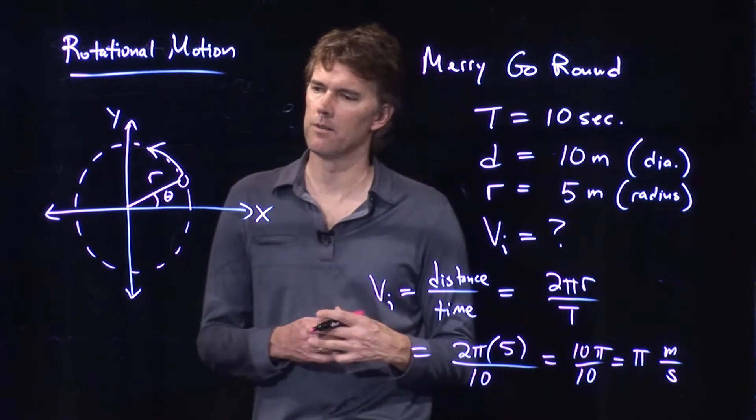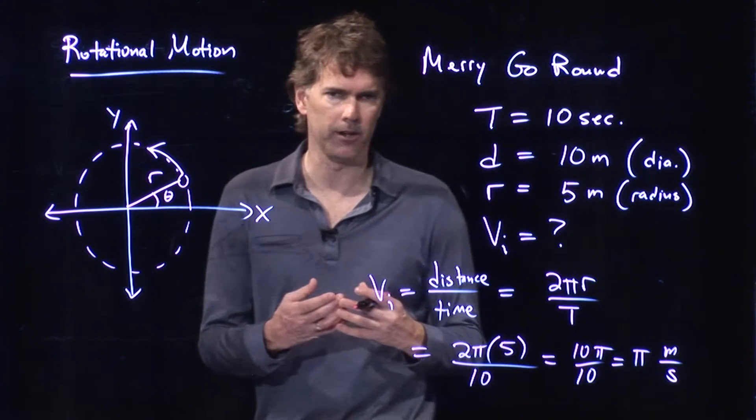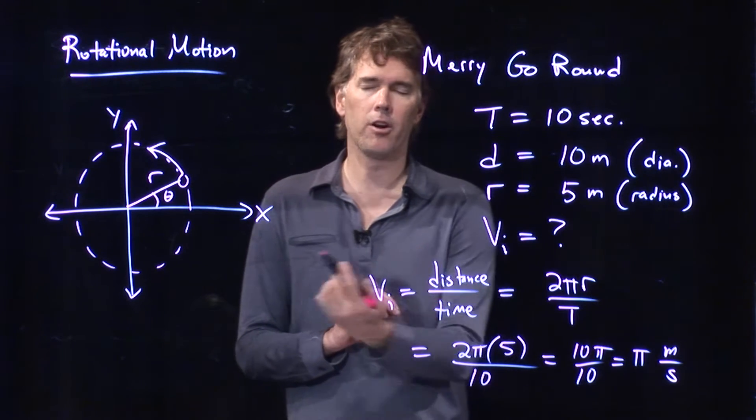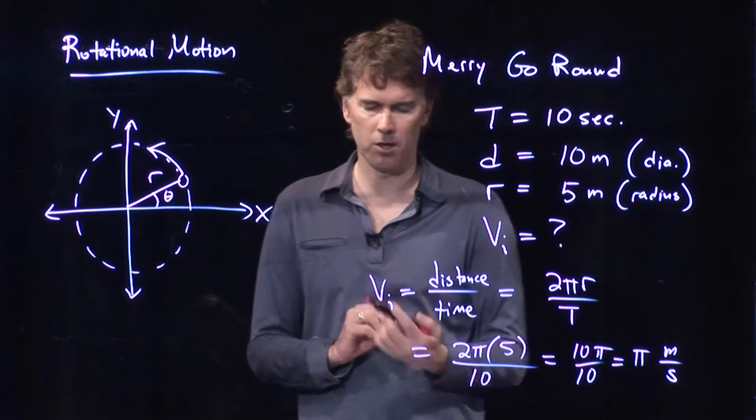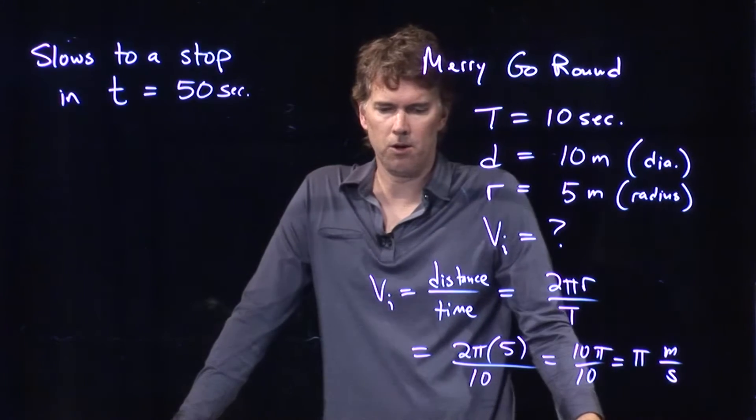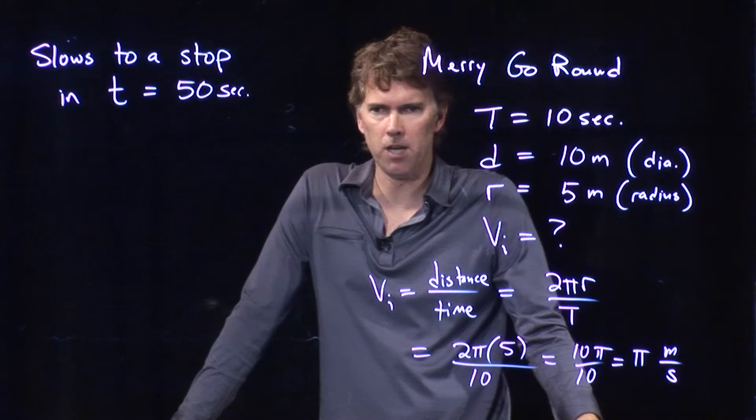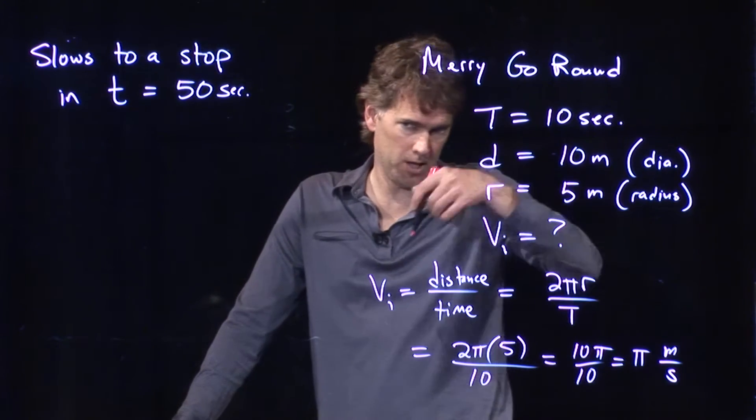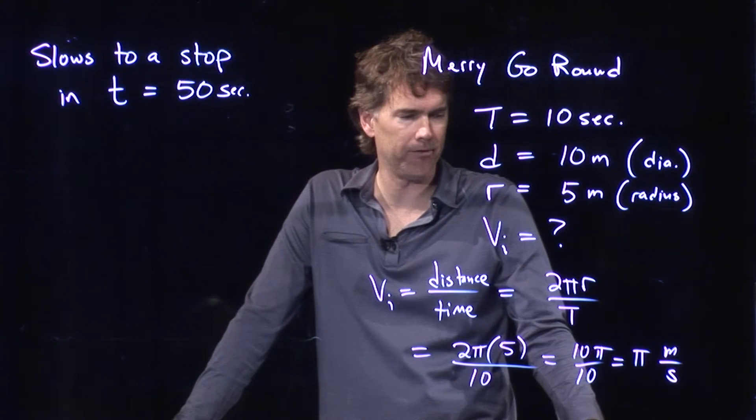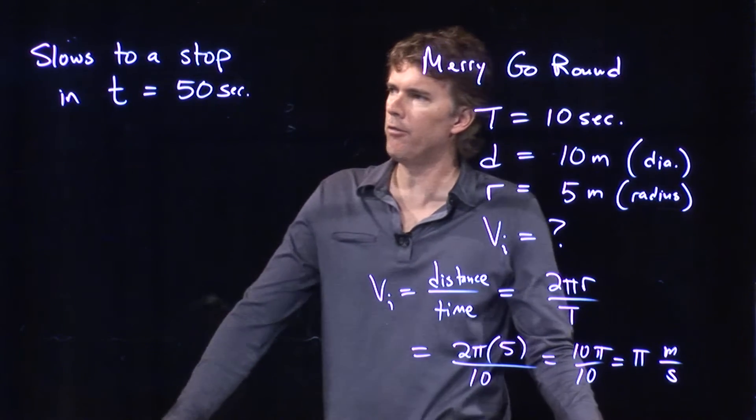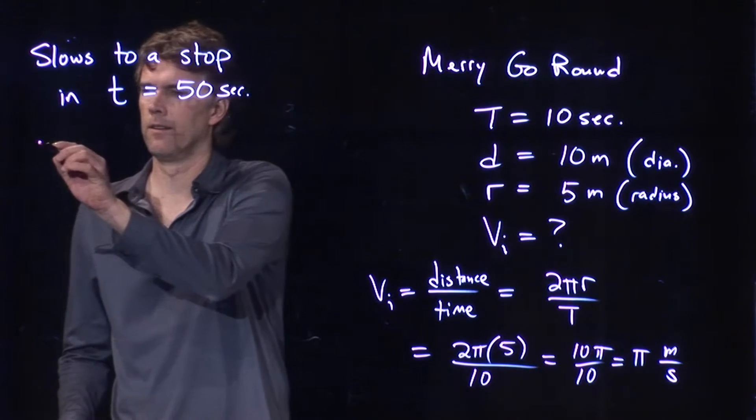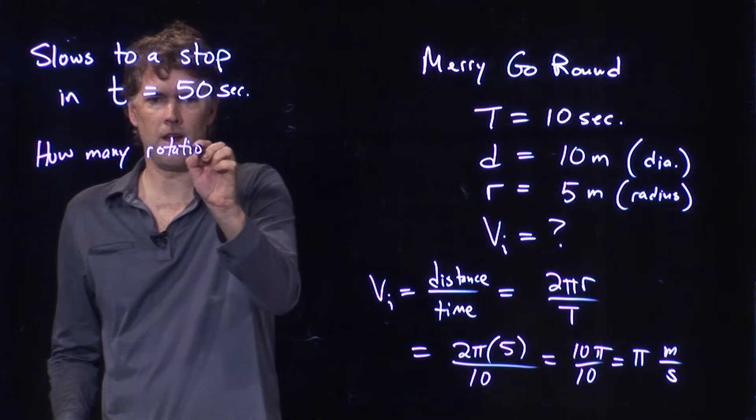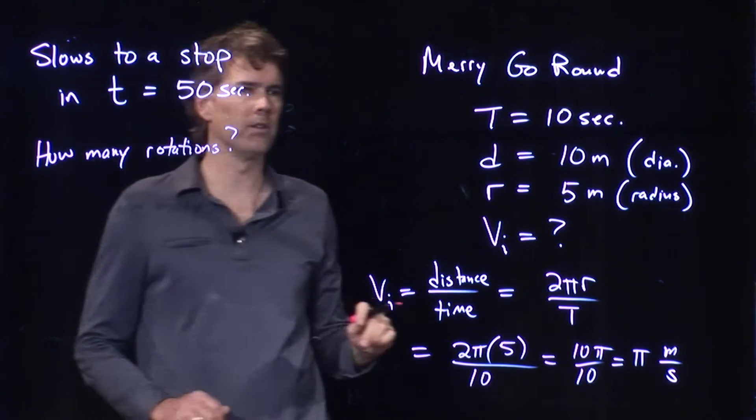So let's add a little complication. Let's say that the merry-go-round is going to slow down to a stop, and let's see if we can figure out how far it's going to rotate as it slows to a stop. We've got a merry-go-round that is initially spinning at a speed of 3.14 meters per second. The person on the edge is going around that fast. And let's ask the question, how far will it rotate if it comes to a stop in 50 seconds? How many rotations is it going to go through?